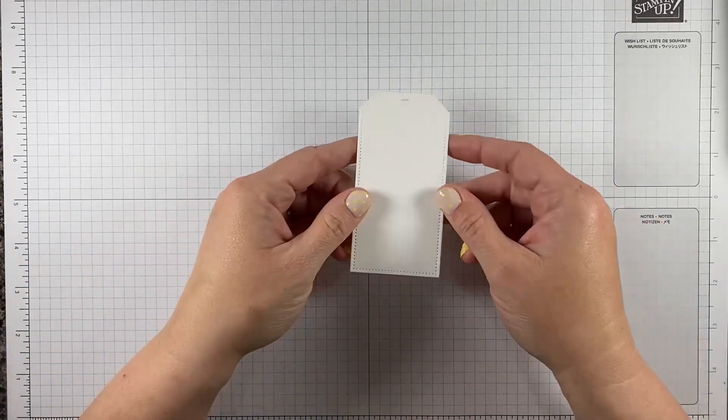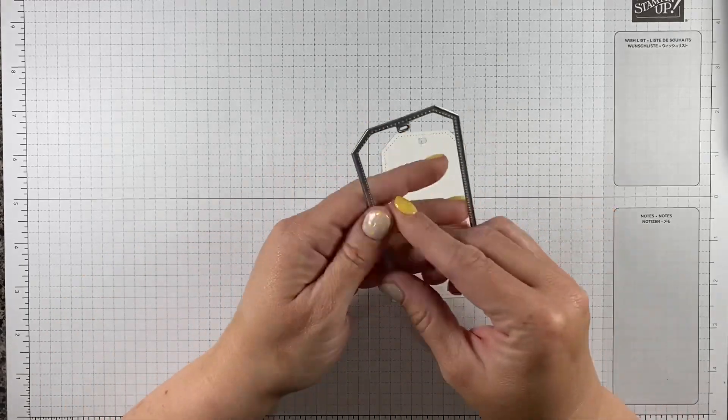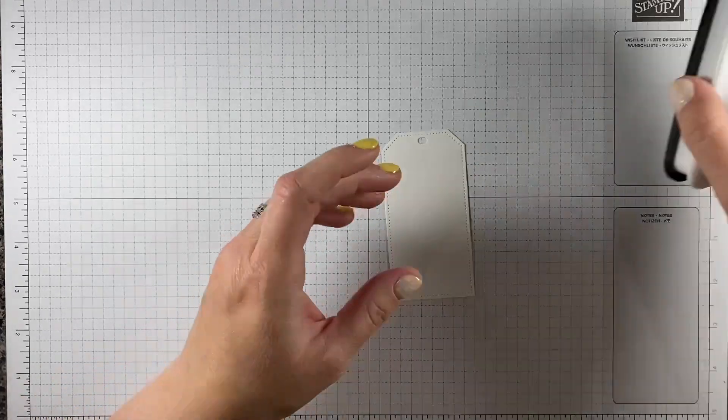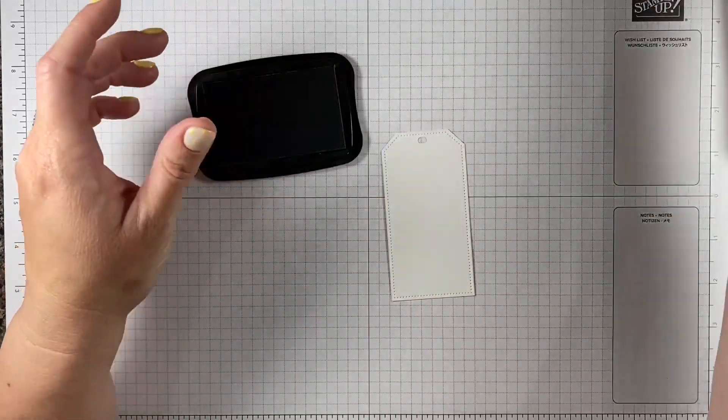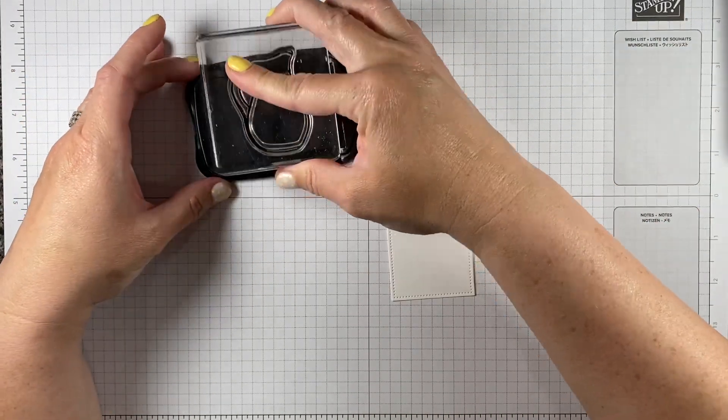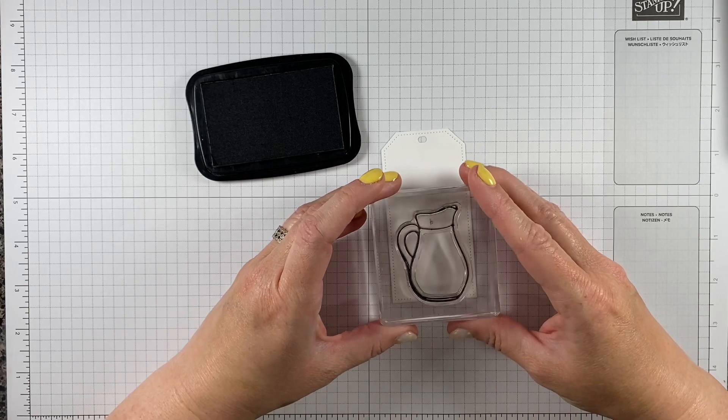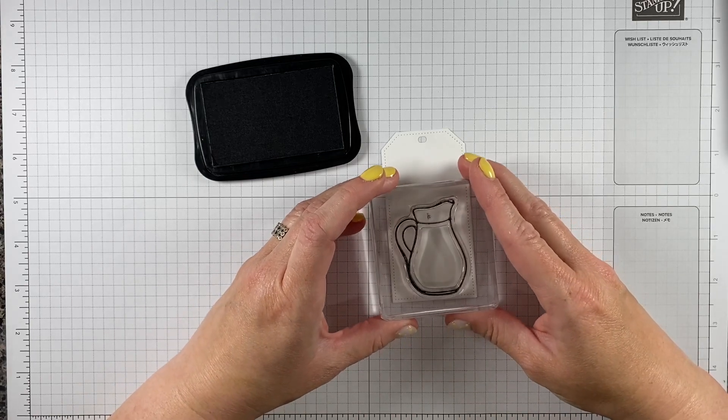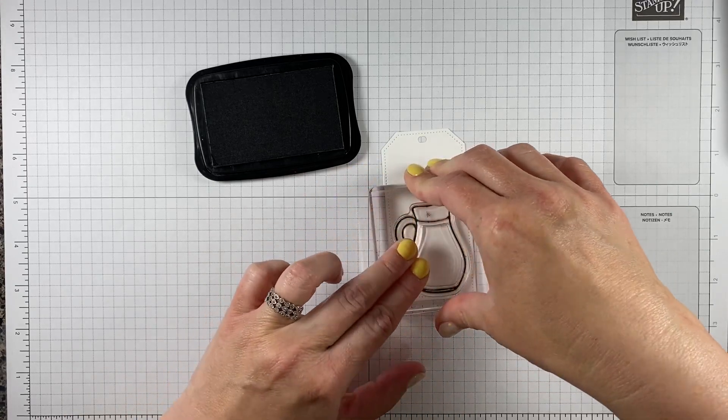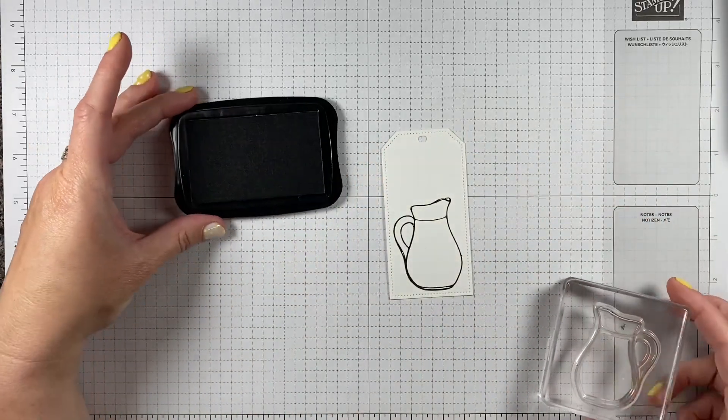I want to start with this white tag, the largest tag you can cut from the Tailored Tags die set with those angled corners. I'm going to start with my black ink pad and the little pitcher stamp. We're going to make a nice refreshing drink. It's a hot summer day here in Utah where I live, so it is time for some lemonade, limeade, strawberry limeade.